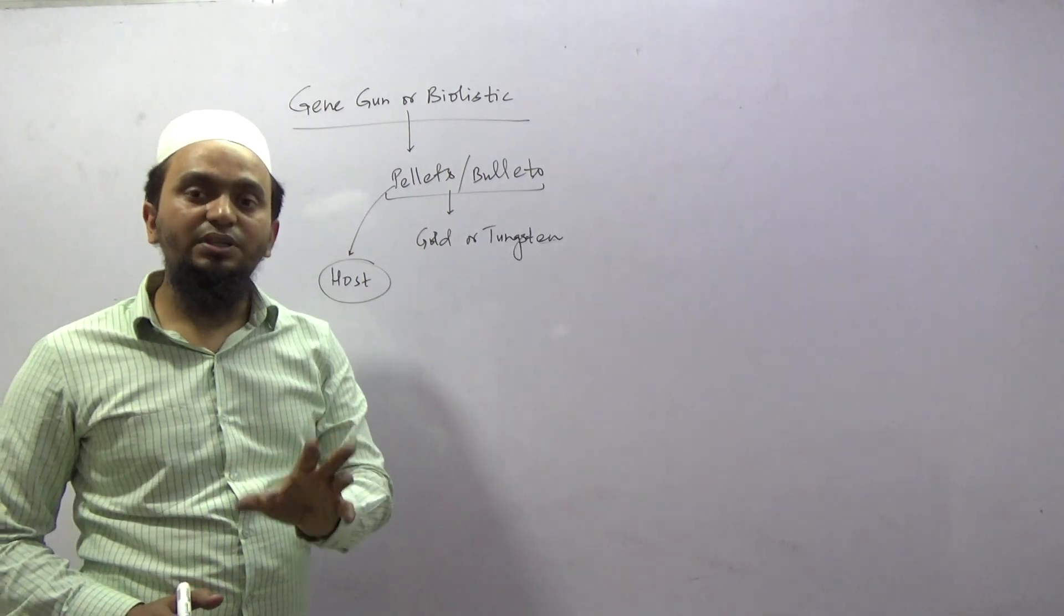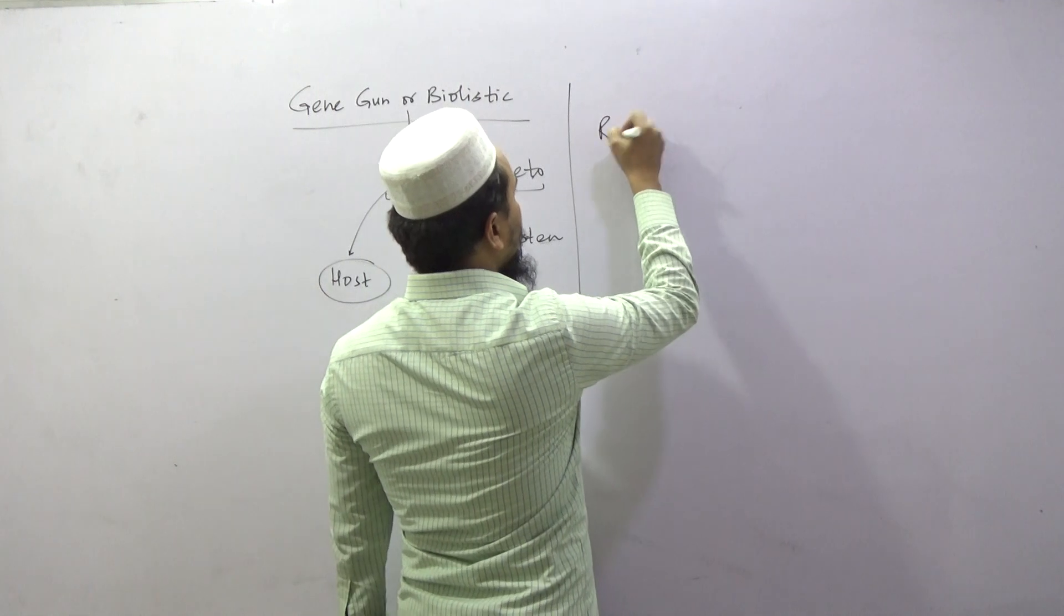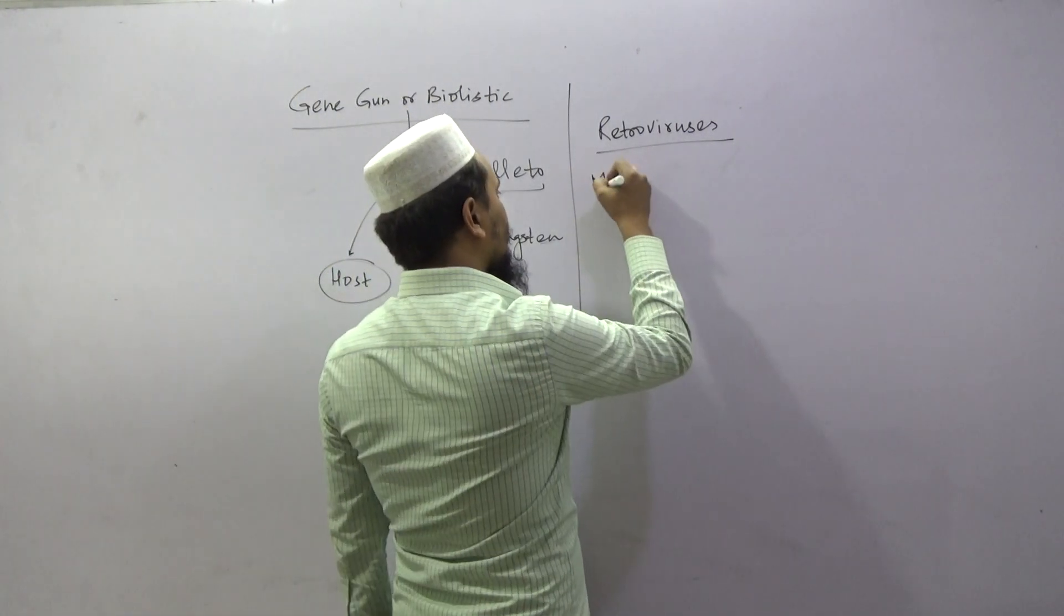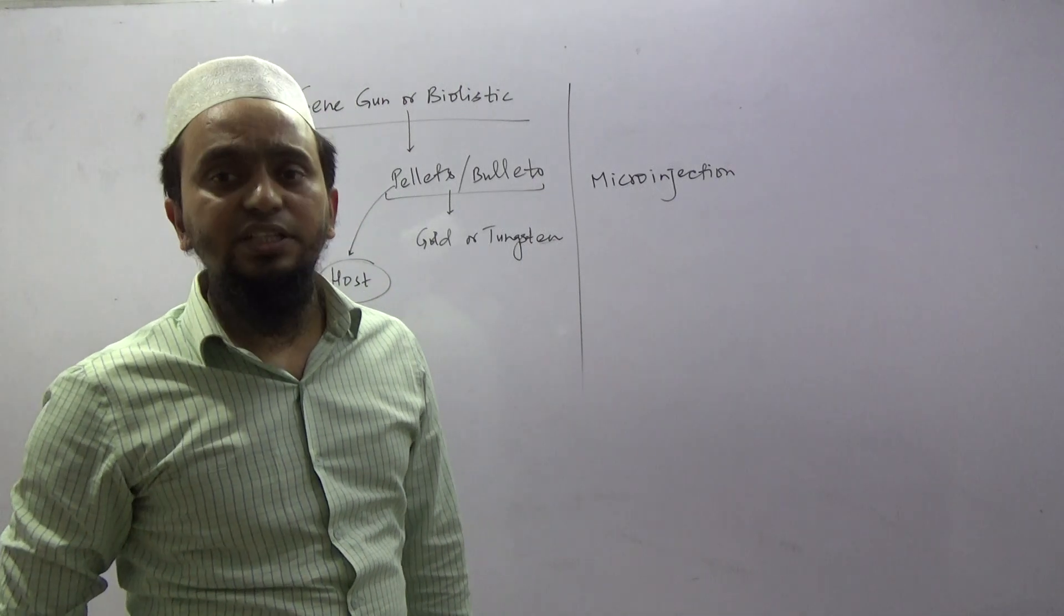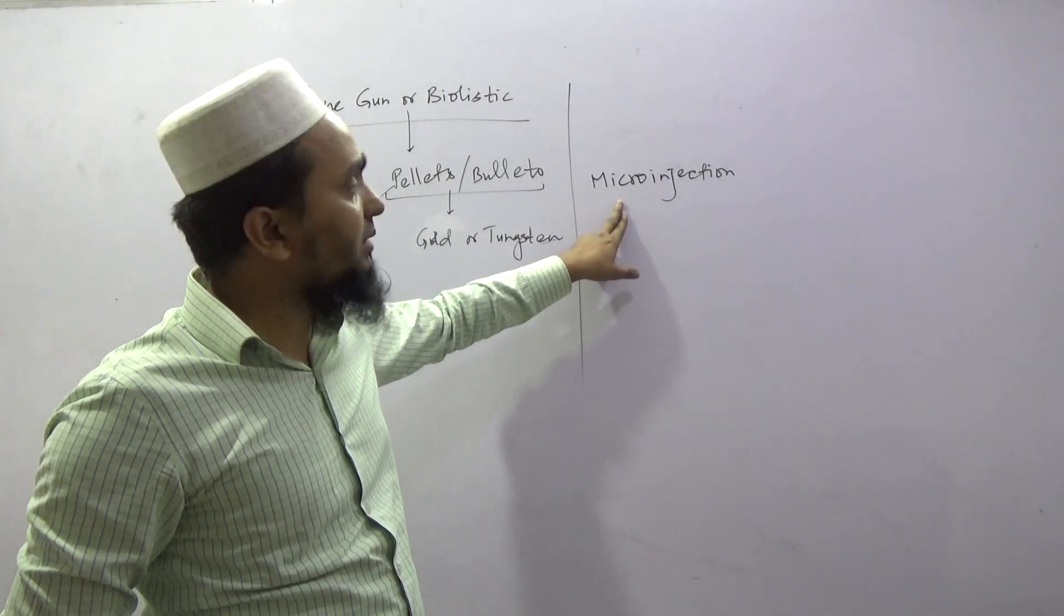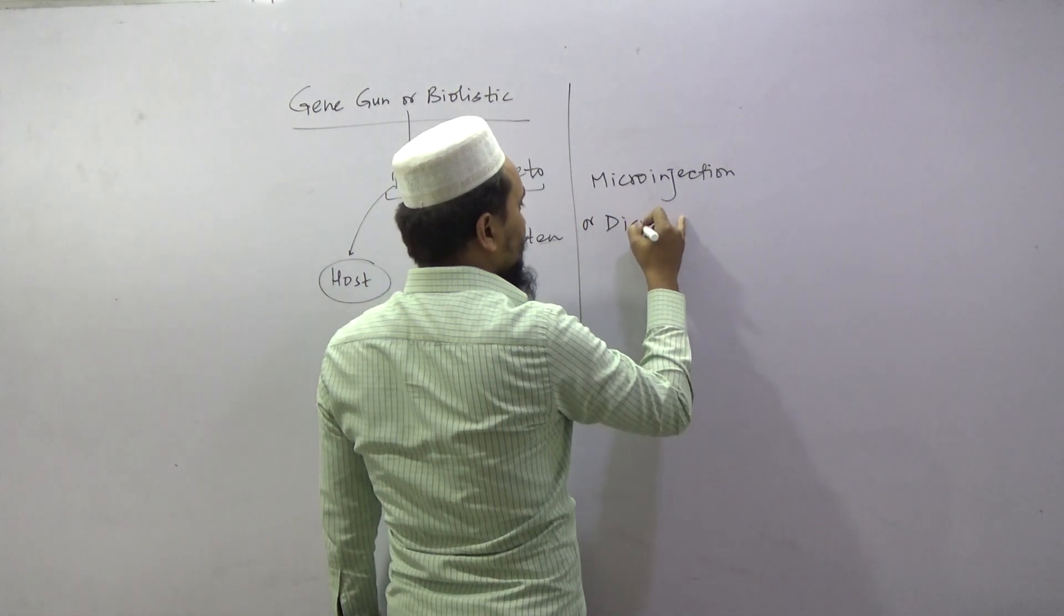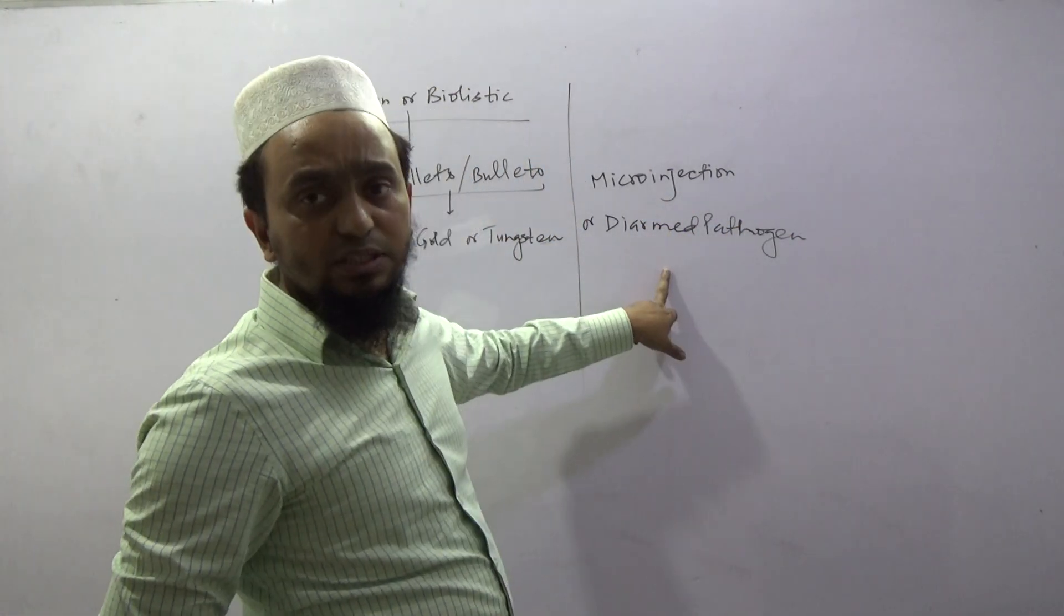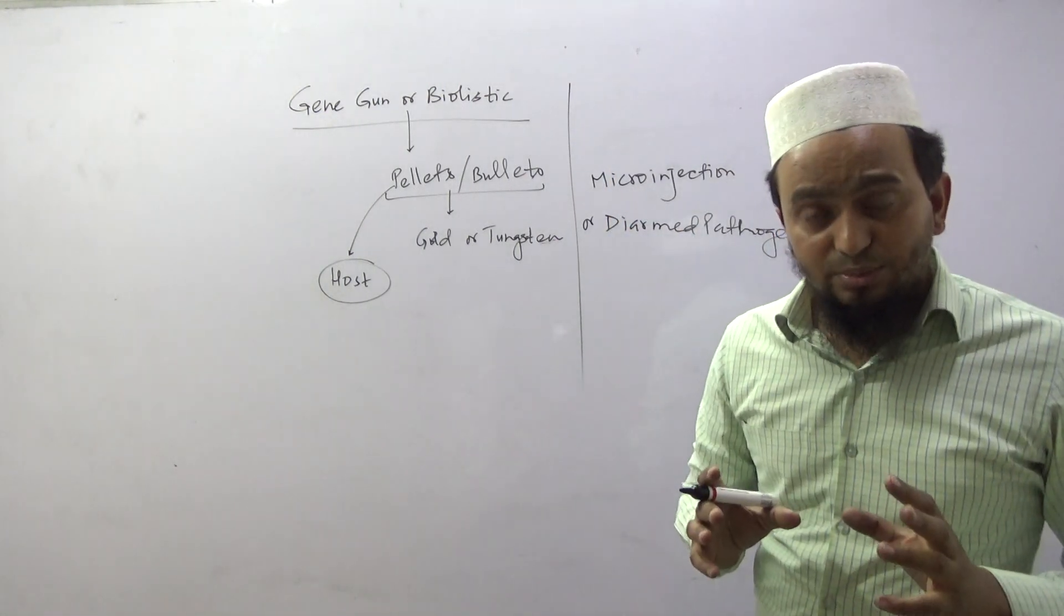So, what do we do in plant cells? If we want to insert the gene of interest in animal cells, then we will use retroviruses. How to insert the gene of interest in animal cells? You can use retroviruses or disarmed pathogens. Disarmed pathogens can be used for animal cells to insert the gene of interest. This is our topic of competent host.